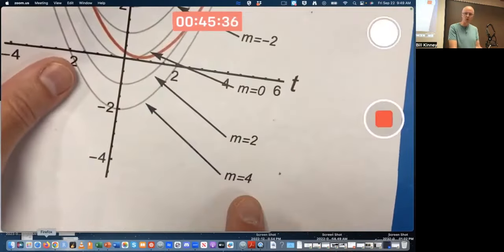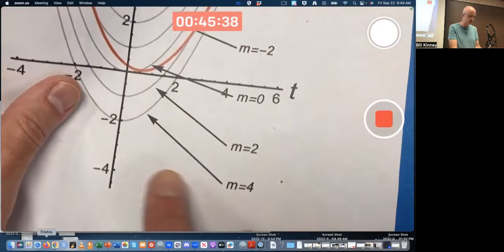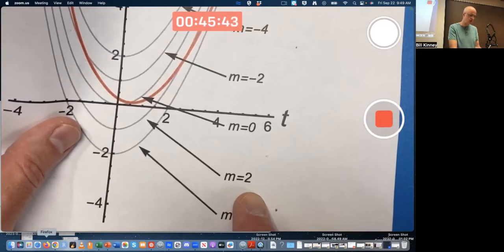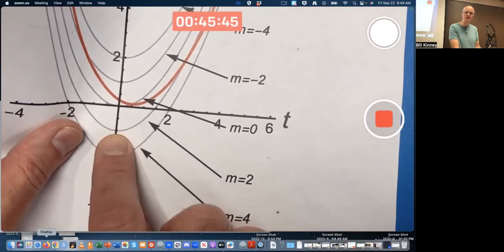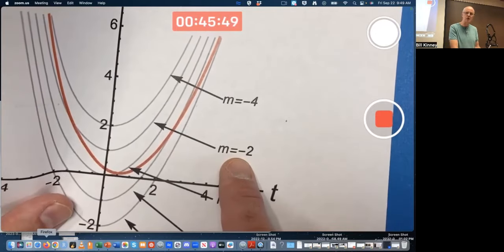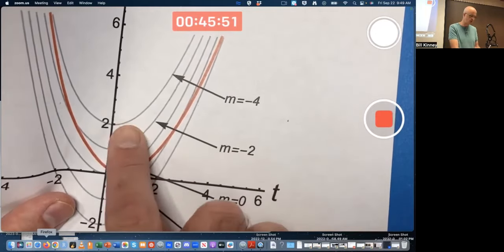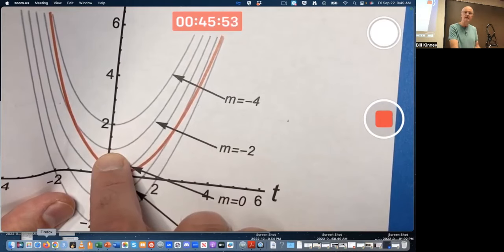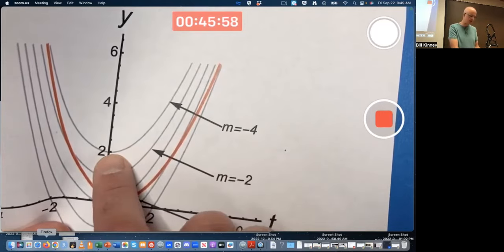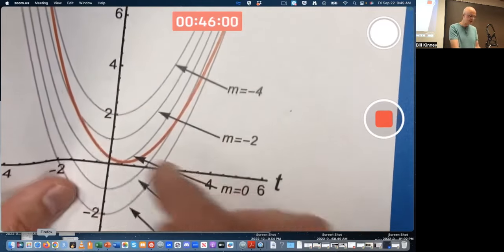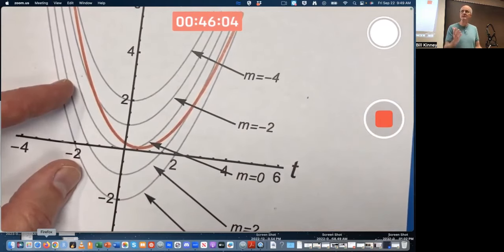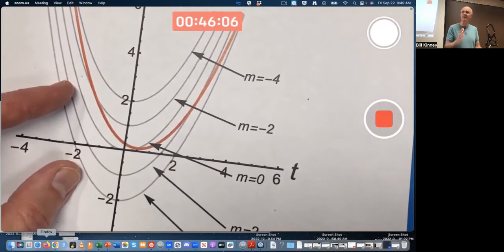So the graphs, you can see, as functions of t are going to be parabolas that open upward because the coefficient of t squared is positive. Negative m over 2 is really the y-intercept. When m is 4, negative 4 over 2 is negative 2. That's the y-intercept there. When m is 2, negative 2 over 2 is negative 1. The y-intercept of that one. When m is 0, the y-intercept is 0. When m is negative 2, the y-intercept is positive 1. Negative 4 over negative 2 is positive 2. That's the y-intercept when m is negative 4. These gray parabolas represent curves in the ty plane where f is constant.